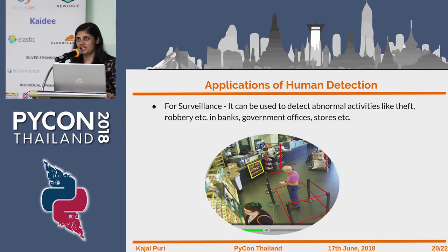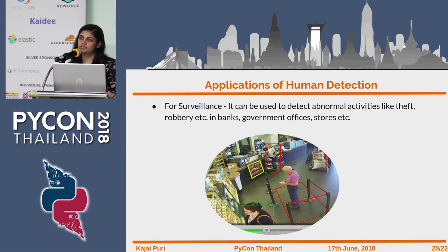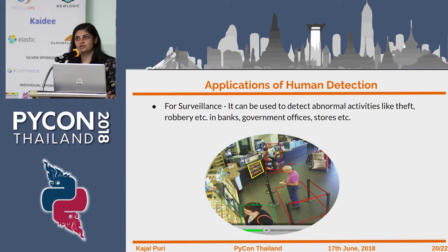The second application we are using at our workplace is for surveillance. We know that a lot of robbery and theft activities happen in banks, government offices, or stores. By using this application we can detect abnormal activities done by humans at different locations. At my workplace, many things were being stolen, and using CCTV footage it was hard to get the face or features of the person. We were actually able to catch somebody using this technique.